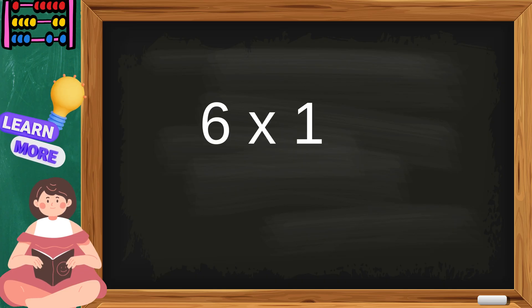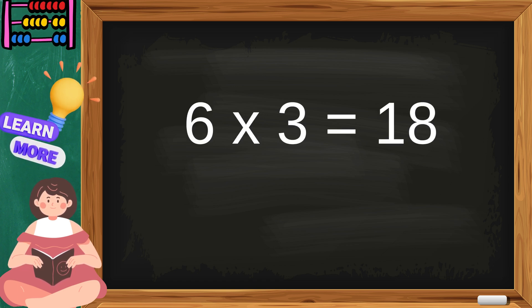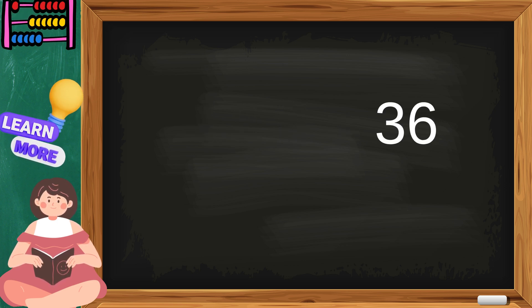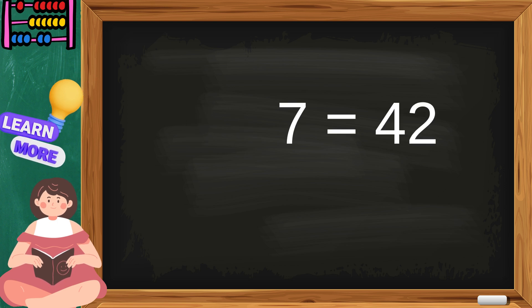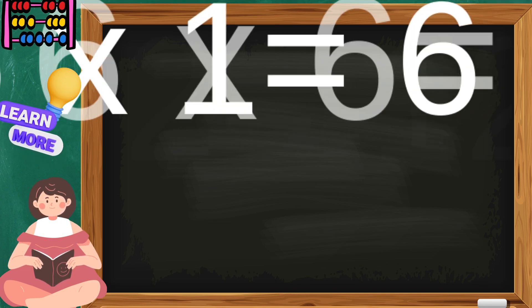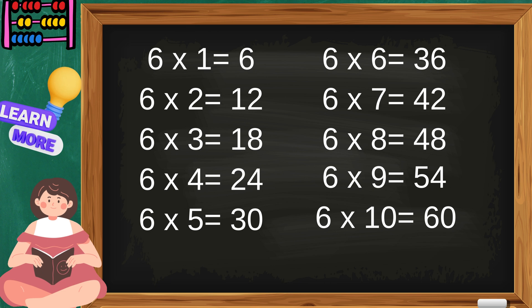Six ones are six, six twos are twelve, six threes are eighteen, six fours are twenty-four, six fives are thirty, six sixes are thirty-six, six sevens are forty-two, six eights are forty-eight, six nines are fifty-four, six tens are sixty. The table of six.